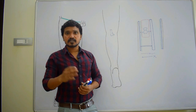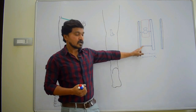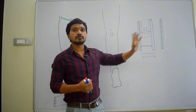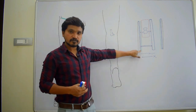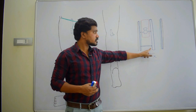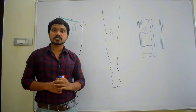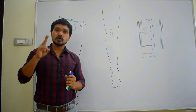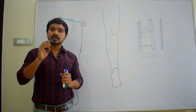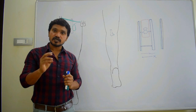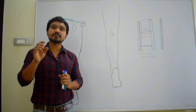Perforators are the veins connecting superficial veins to the deep veins. So the three types of veins are: superficial veins, deep veins, and perforator veins. Now we will discuss about the superficial veins. There are two main superficial veins in the lower limb: the great saphenous vein and the small saphenous vein. The literal meaning of 'saphenous' is 'easily visible.'